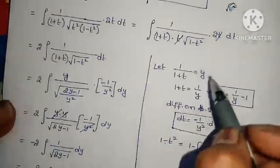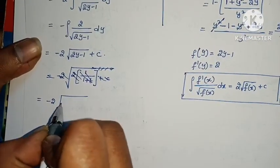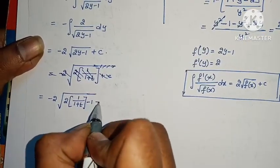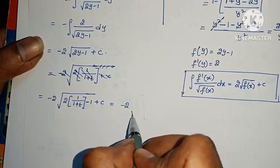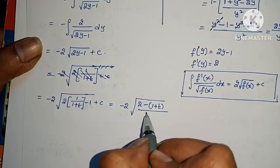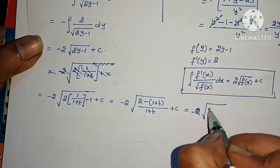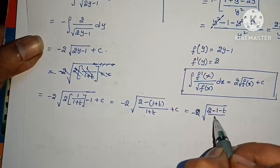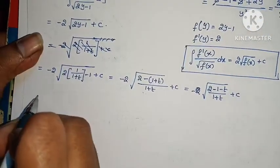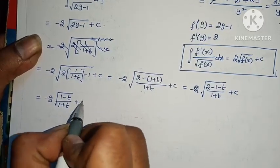Substituting back y equals 1 by (1 plus t): minus 2 root of (2 times 1/(1 plus t) minus 1) plus c. Taking LCM and simplifying gives minus 2 root of (2 minus 1 minus t) by (1 plus t) plus c, which equals minus 2 root of (1 minus t) by (1 plus t) plus c.